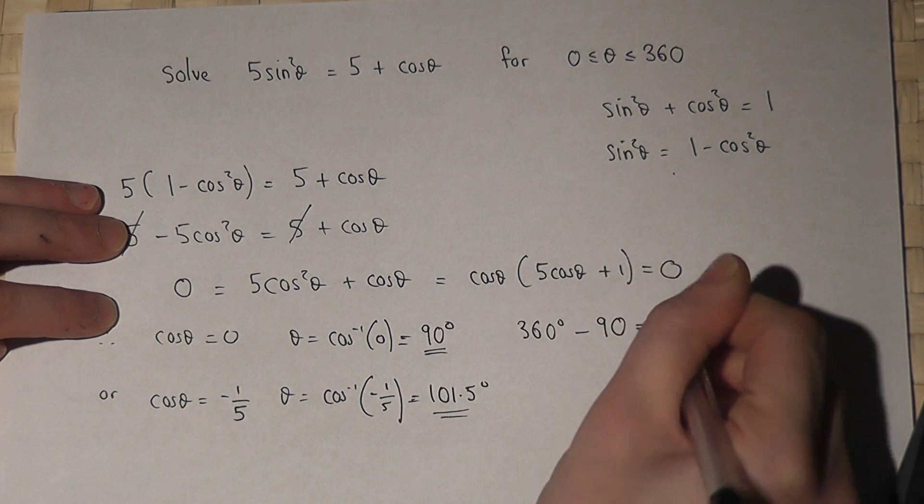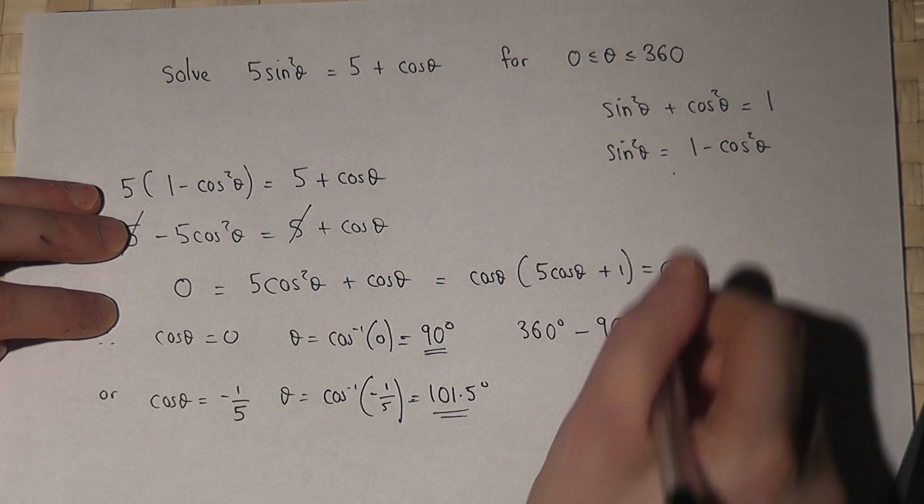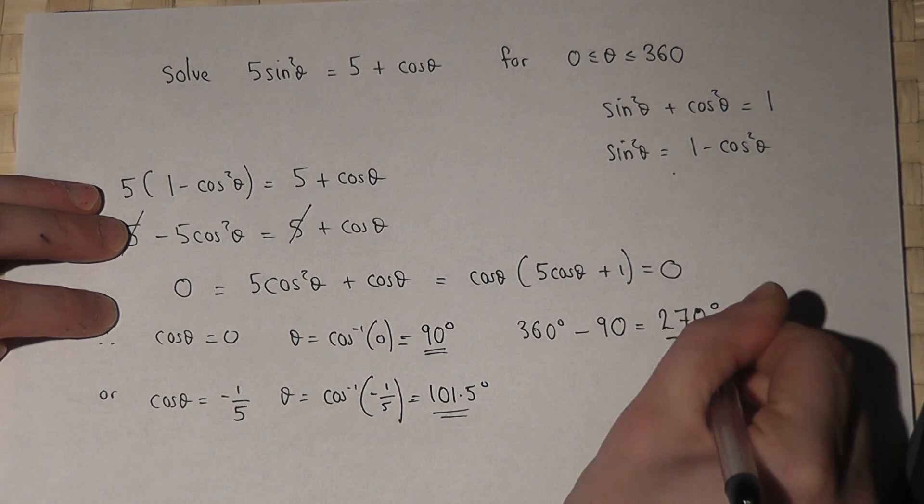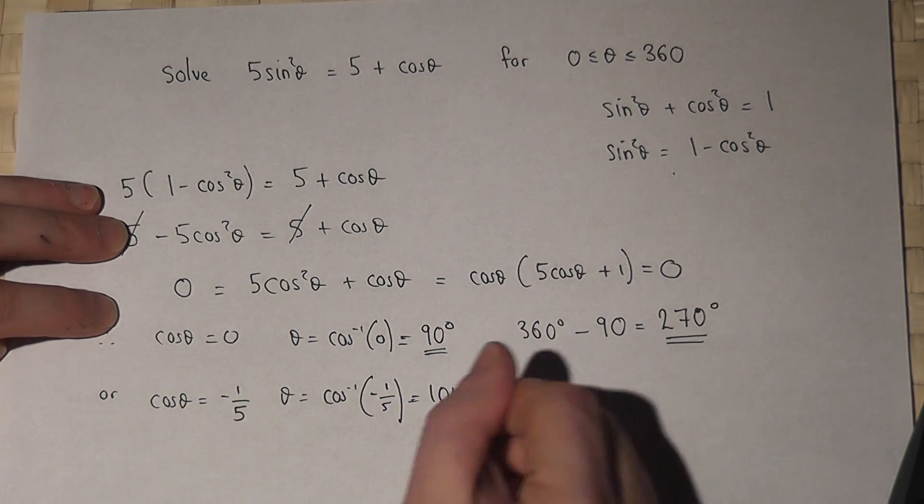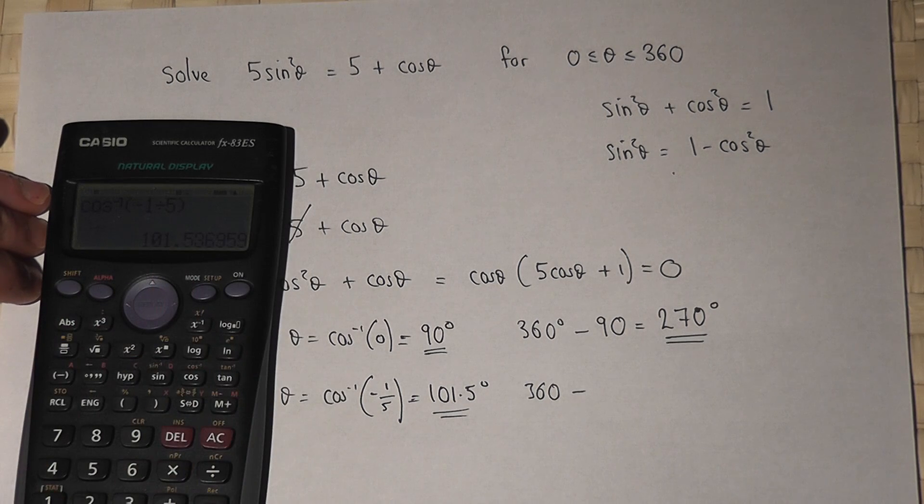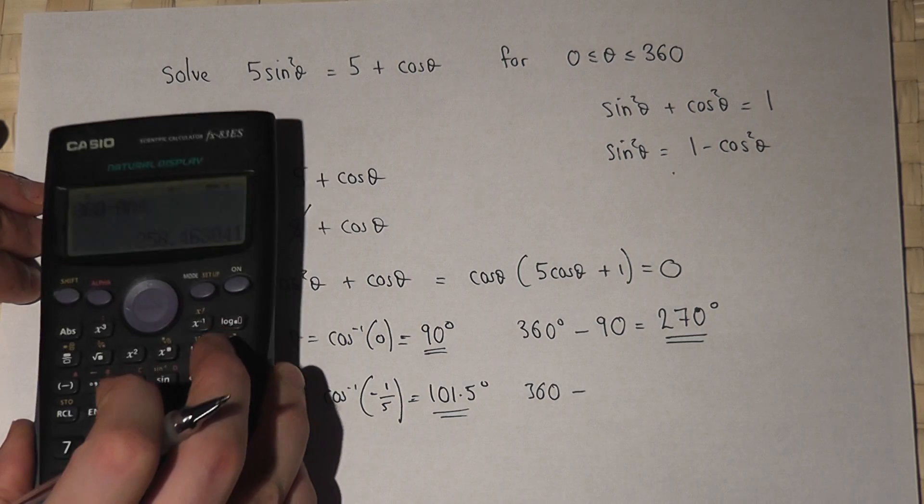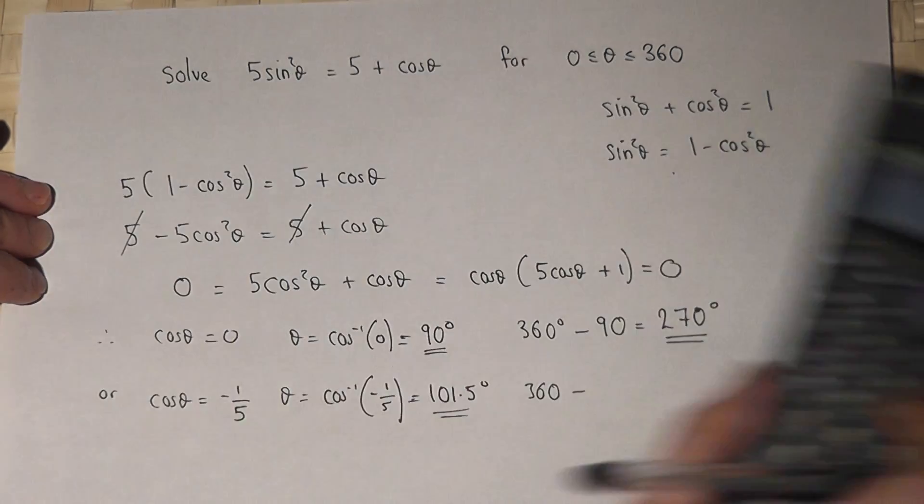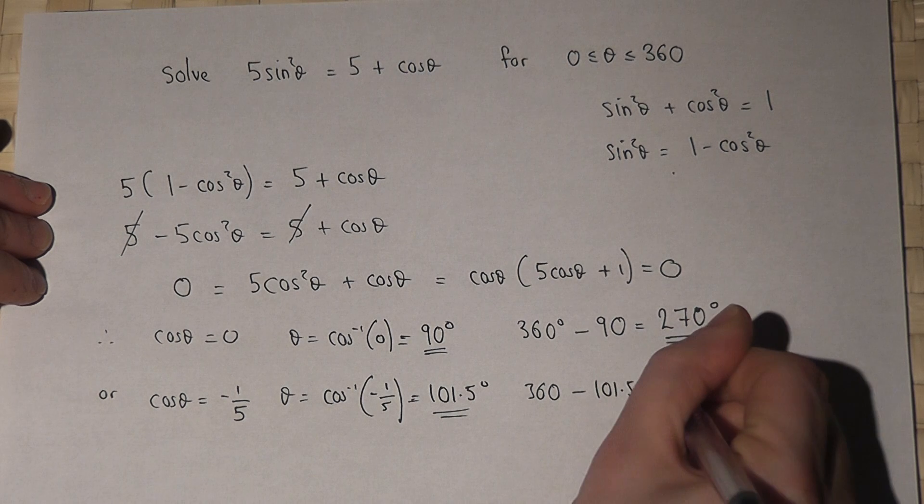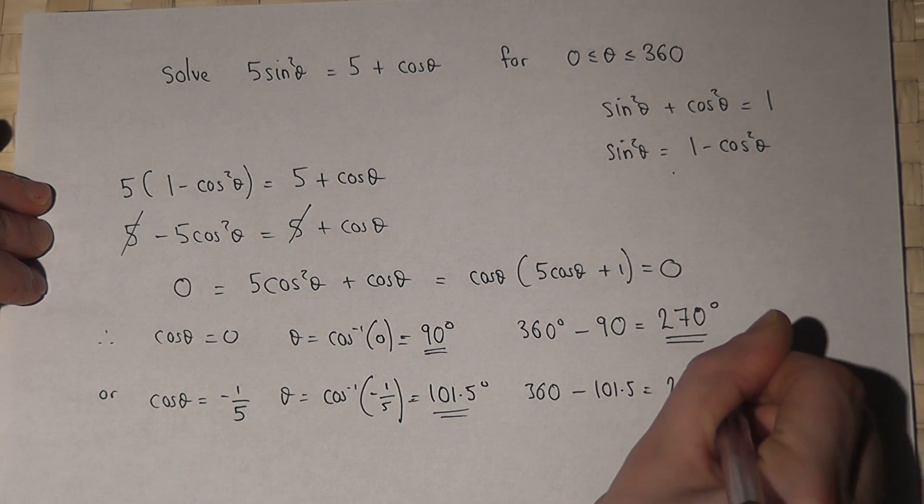So 360 minus 90 is 270 degrees. And 360 minus this value, referring back to the accurate number, gives us 258.5 degrees.